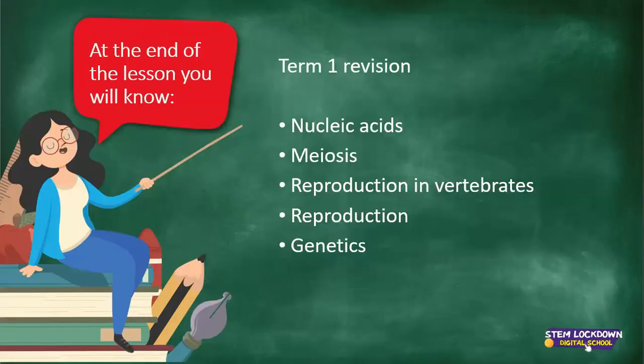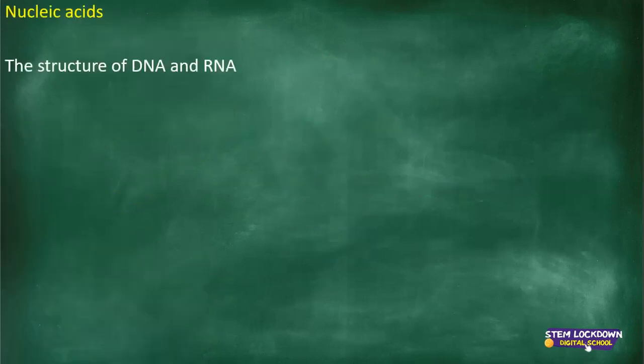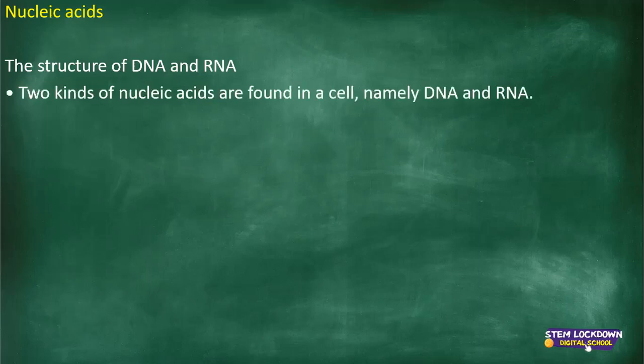Term one's revision covers nucleic acids, meiosis, reproduction, vertebrate reproduction, and genetics. Other sections will be covered from the textbook and study guide. Nucleic acids form the structure of what we know as DNA and RNA — those are the two types of nucleic acids found in cells.